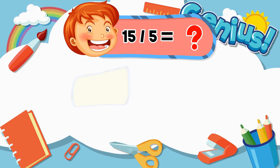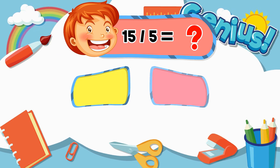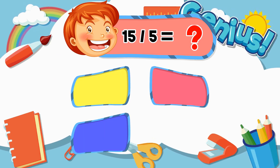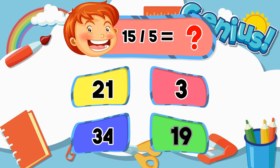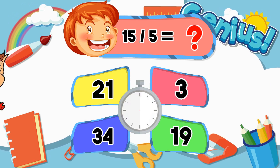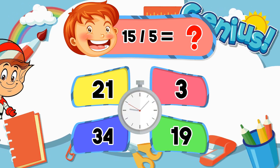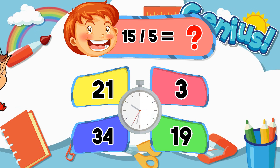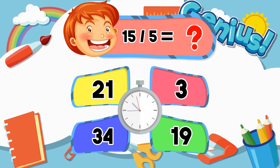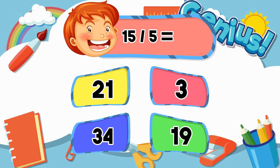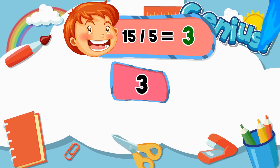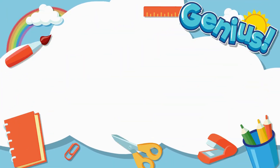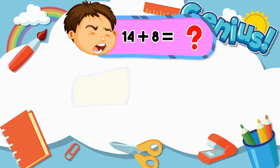What is 15 divided by 5? Options: 21, 3, 34, 19. The answer is 3.